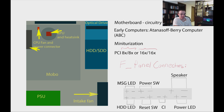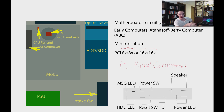If you get the polarity wrong, don't worry — just turn the connector the other way, restart, and test for functionality. Before you do any physical adjustments, however, make sure your computer is turned off and unplugged, and press the power button once or twice to discharge any residual electricity that may be remaining. Also, make sure to ground yourself by wearing an anti-static wristband or by touching a large metal object.